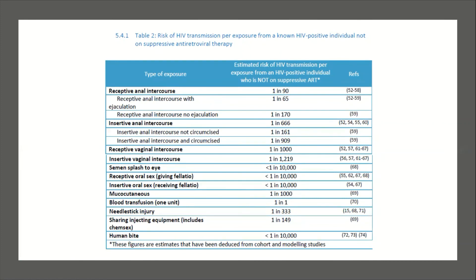For example, if the source is known to have HIV and receptive anal intercourse occurs, the risk is 1 in 90. If ejaculation has occurred the risk is 1 in 65, and if no ejaculation occurred it's 1 in 170. The risk from a needle stick injury where the other person is known to have HIV is 1 in 333.